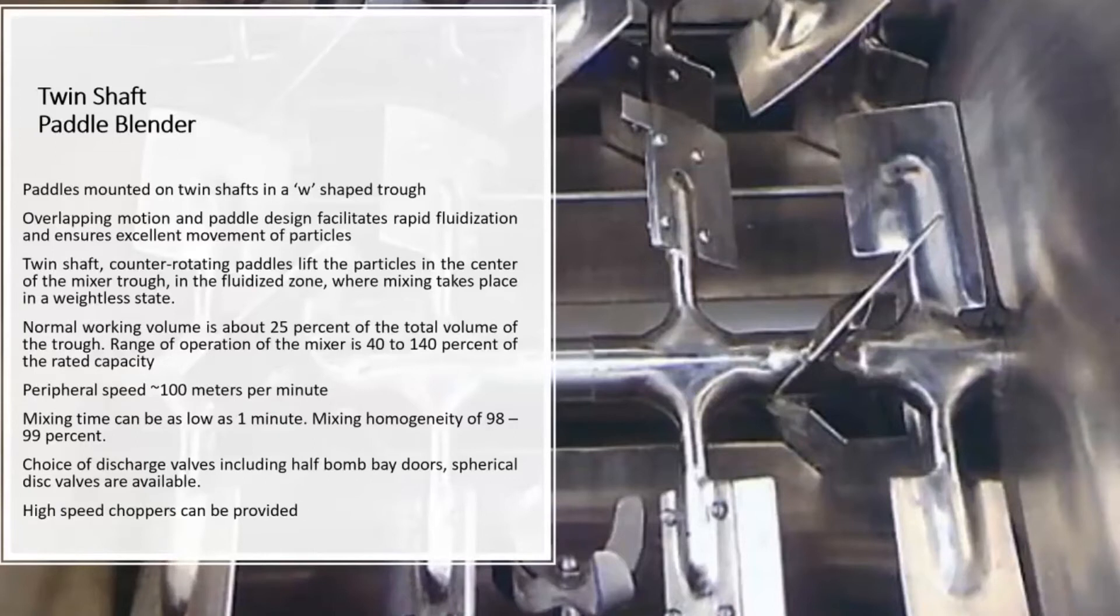These can be equipped with choppers and the disintegration of lumps and agglomerates can happen. The mixers are also equipped with half bombay door discharges or spherical disc walls so that typically 98% of the product can be discharged from these blenders.